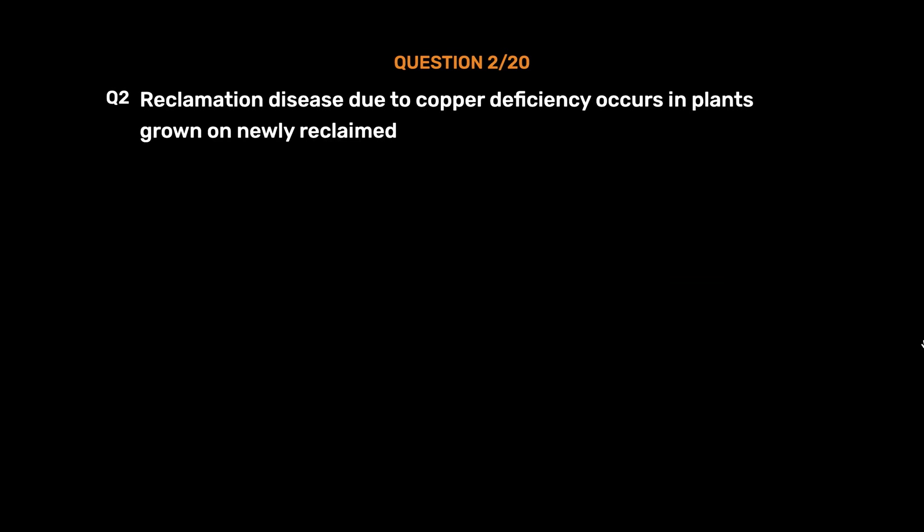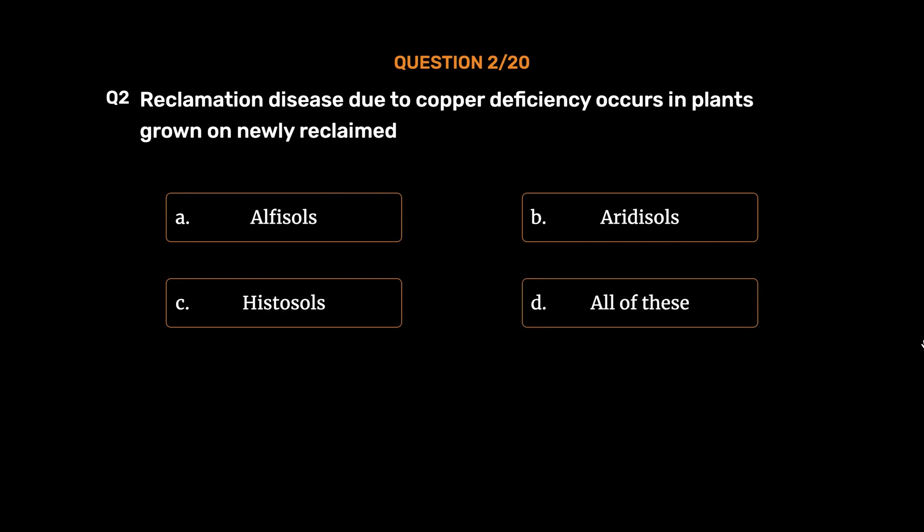Question number 2. Reclamation disease due to copper deficiency occurs in plants grown on newly reclaimed: option A, Alfisols; option B, Aridisols; option C, Histosols; option D, All of these. The correct answer is option B, Aridisols.